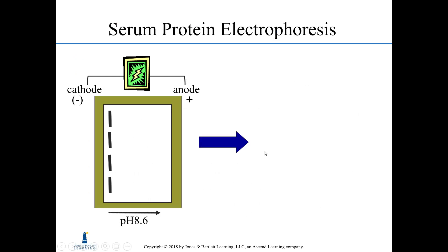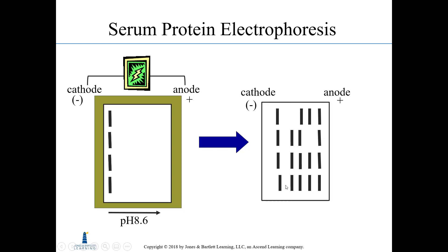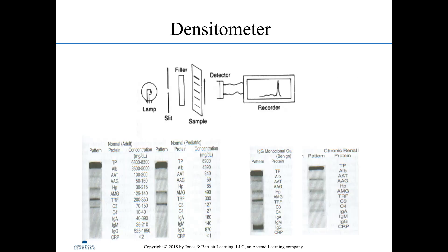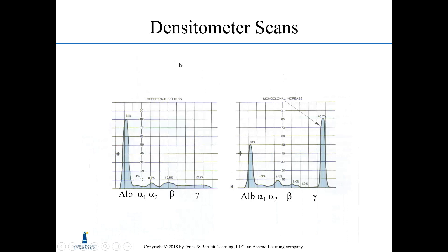Once the charge is applied, proteins migrate and produce a particular banding pattern. Protein fractions are then fixed by immersing the support medium in an acid solution, which denatures and immobilizes the proteins. Proteins are stained and appear as bands on the support medium. The membrane is inspected visually or with a densitometer — light from a lamp passes through a filter, hits the sample, and a detector produces a scan image. A normal densitometer scan shows all fractions: albumin, alpha-1, alpha-2, beta, and gamma.